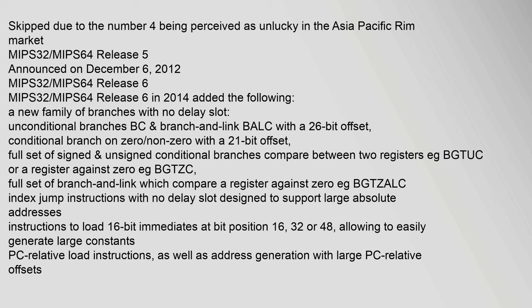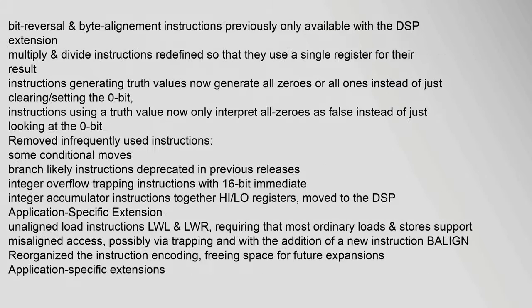MIPS-32/MIPS-64 release 5 was announced on December 6, 2012. MIPS-32/MIPS-64 release 6, in 2014, added a new family of branches with no delay slot, unconditional branches (BC), and bit reversal.